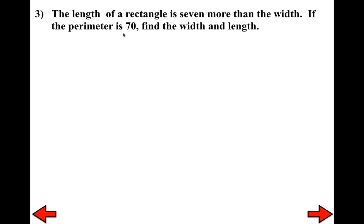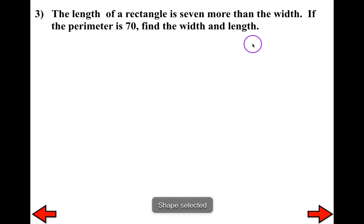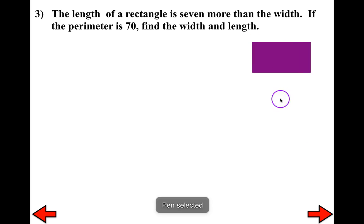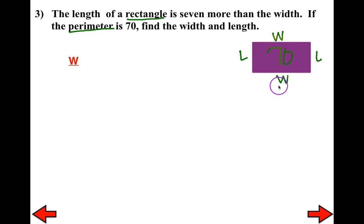Number three: the length of a rectangle is seven more than the width. If the perimeter is 70, find the width and length. We've done problems like this before in seventh and eighth grade. For a rectangle, the perimeter is the sum of all sides — two widths and two lengths — which should equal 70. There are two unknowns: the length and the width.